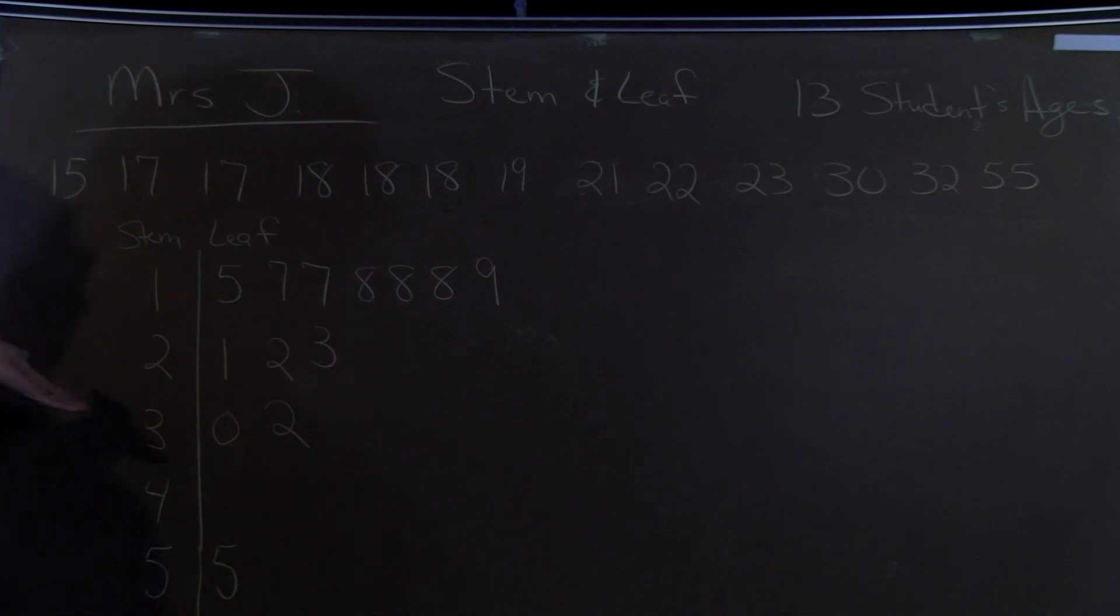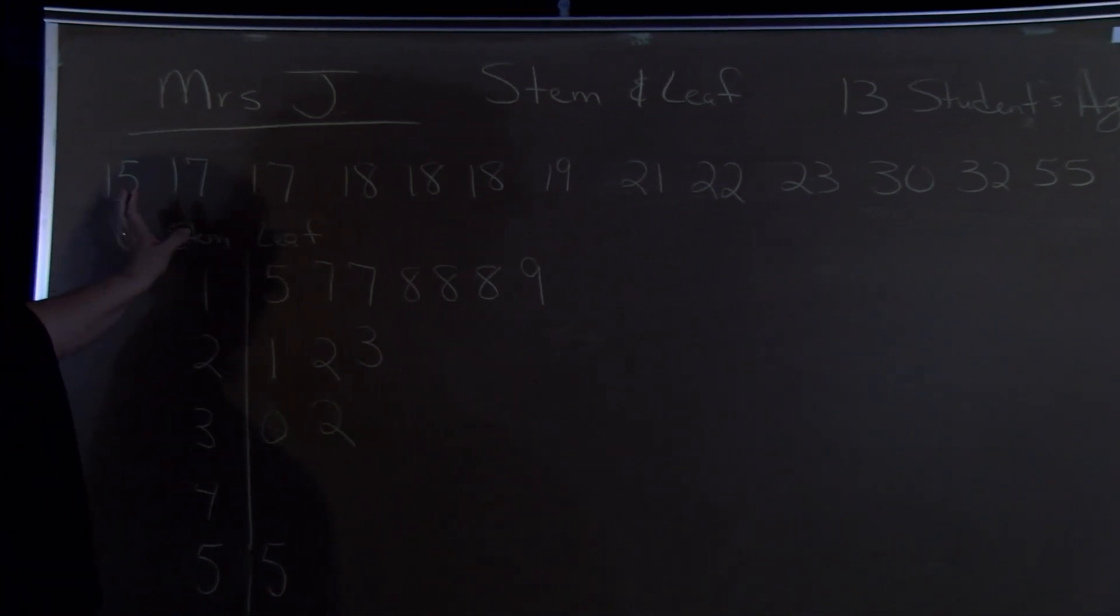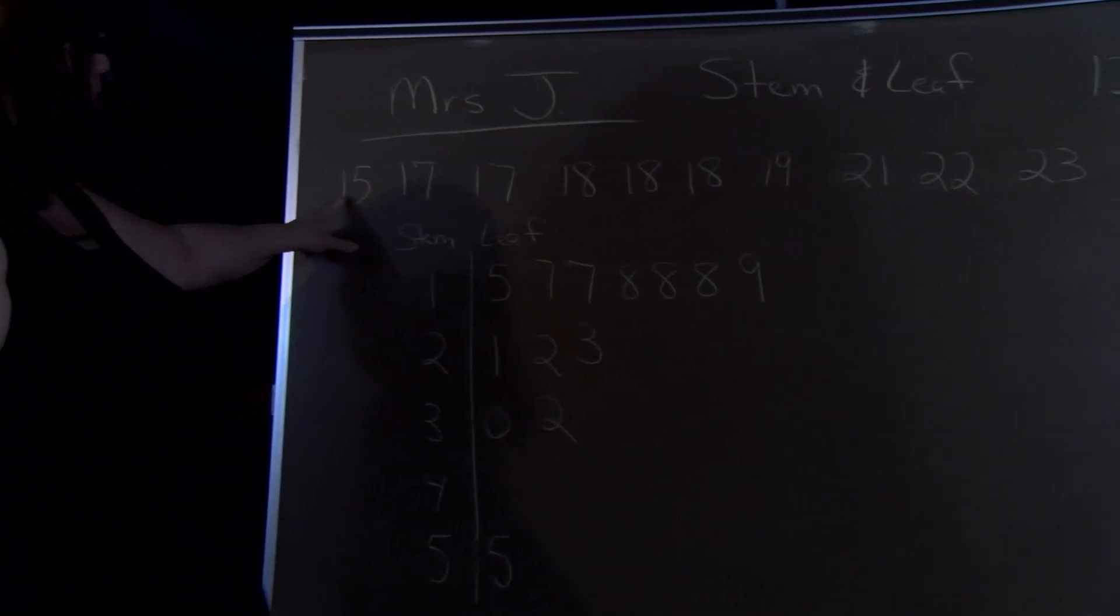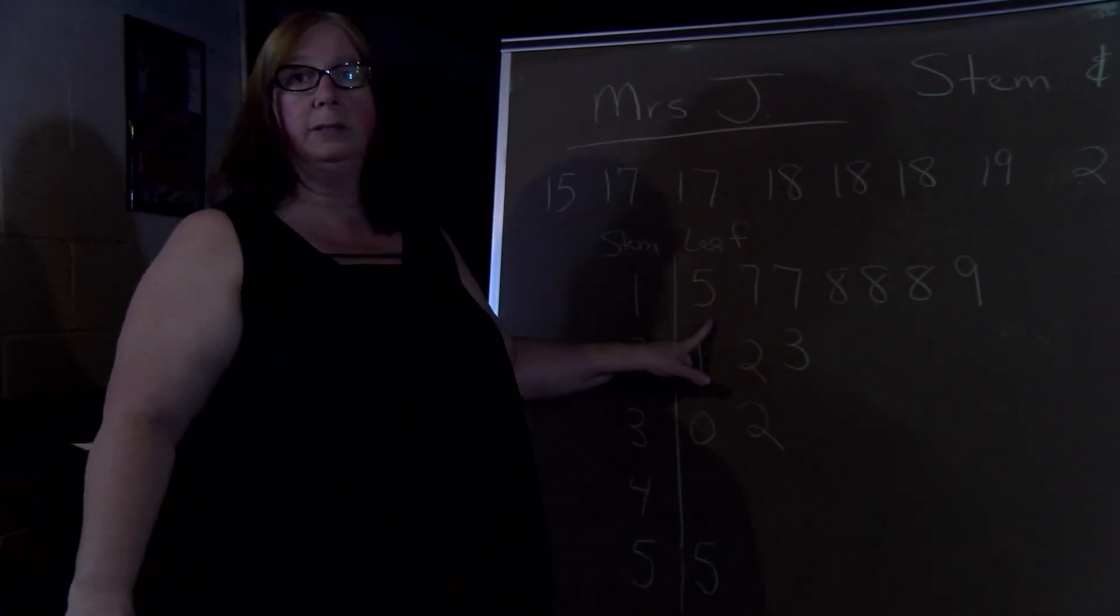So that's how you would draw your stem and leaf. Now when you are reading these, it's not always the digits like it's shown. They could put a decimal. So if there were decimals on all these, then it would tell you this was the 10th position was the leaf.